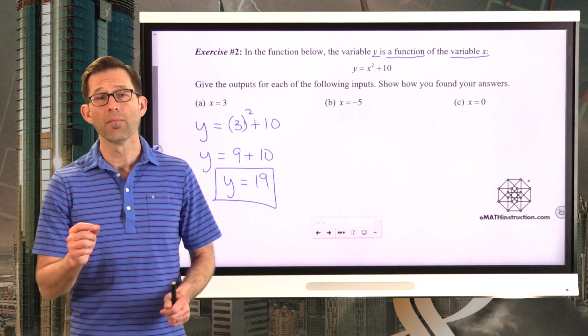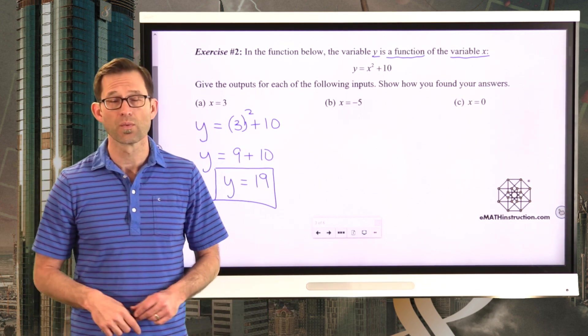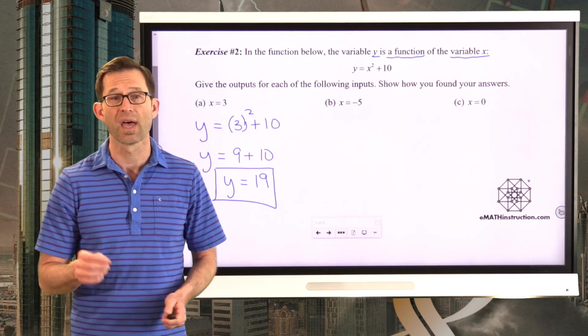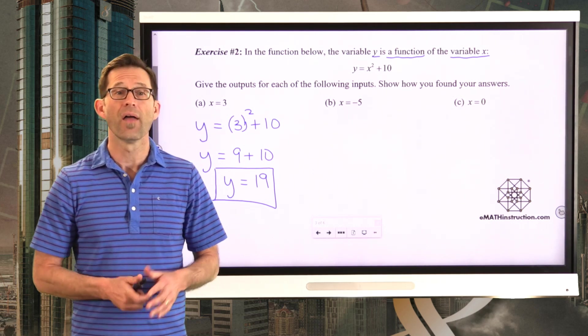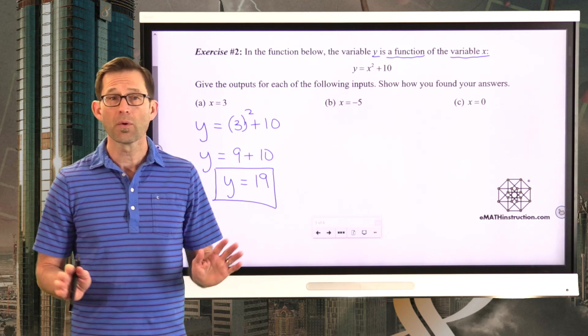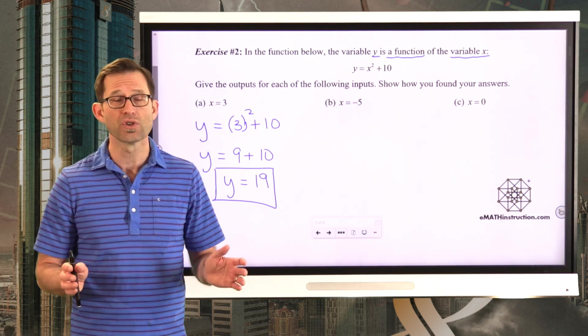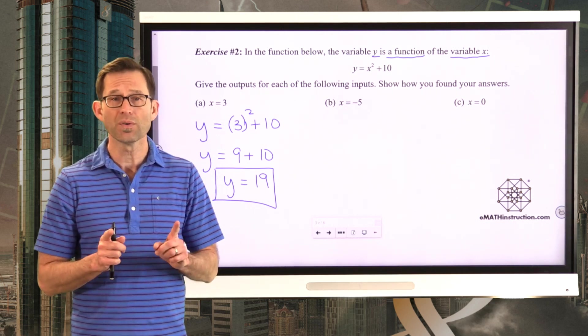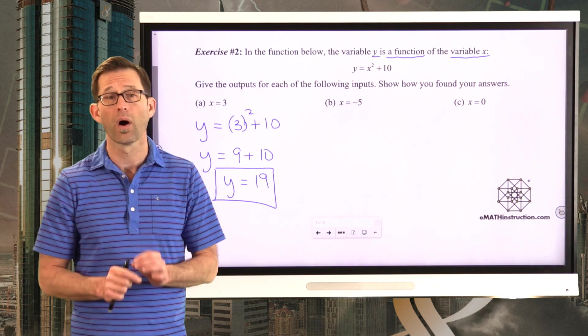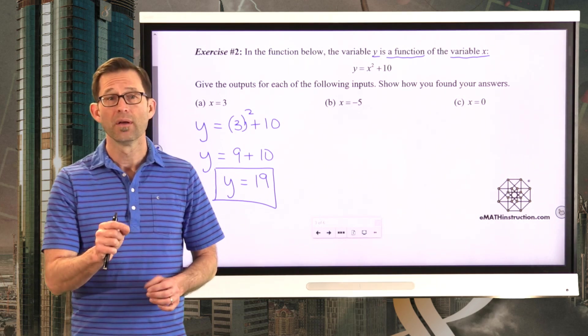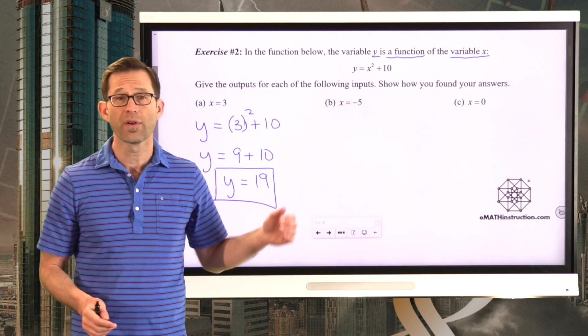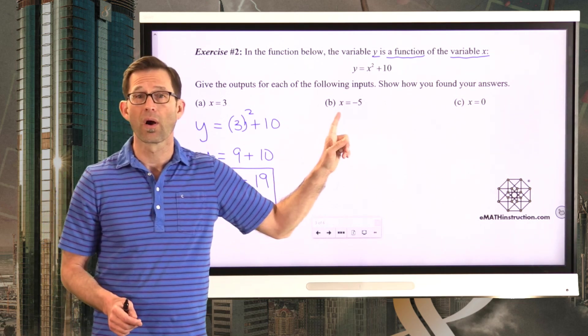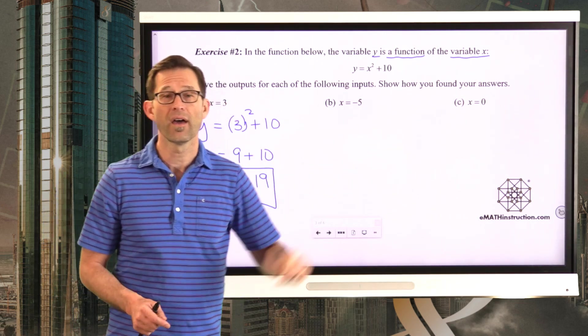Now, I can't promise you this, but in most conventional situations, when we have a function that involves the variables x and y, almost always the input is x and the output is y. Don't get me wrong, that could change in certain situations. But mostly, if the two variables are x and y, x is the input, y is the output. What I'd like you to do now is pause the video and figure out what the outputs are when the inputs are x equals negative 5 and x equals 0.